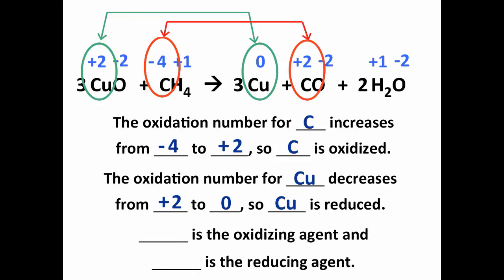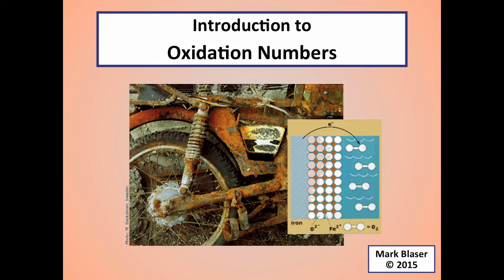Going back to something we've seen before: the substance that is oxidized is the reducing agent, and the substance that's reduced is the oxidizing agent. So copper(II) oxide CuO is the oxidizing agent and methane CH₄ is the reducing agent. The agents refer to the whole substance involved in the process. That is it for our introduction to oxidation numbers.